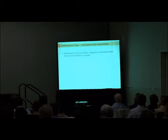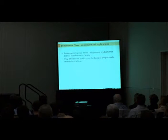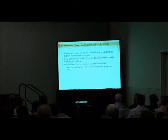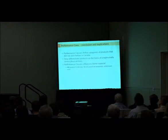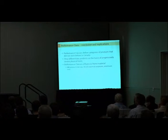Some implications here: they define categories of product that did not exist before in Canada. They differentiate products on the basis of progressively severe physical tests. It also influences frame material. For all intents and purposes, an AW product will be made of aluminum, because the tests are so severe that that's the only way you'll pass them all.